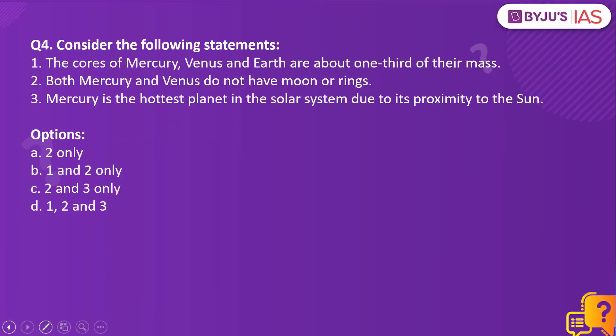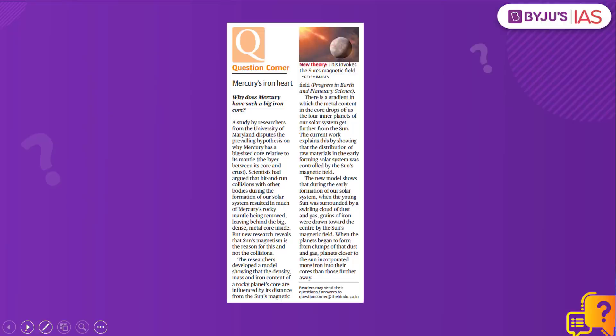Moving on to question number 4. Consider the following statements. Statement 1: The cores of Mercury, Venus and Earth are about one-third of their mass. Statement 2: Both Mercury and Venus do not have moons or rings. Statement 3: Mercury is the hottest planet in the solar system due to its proximity to the Sun. An article in the Hindu newspaper talks about Mercury's big iron core. While the earlier hypothesis was that Mercury had a large core due to collision with other celestial bodies during the solar system's formation, a new study states it is influenced by the planet's distance from the Sun's magnetic field.